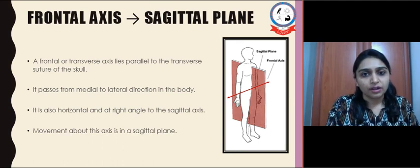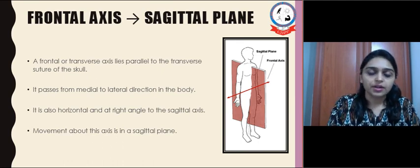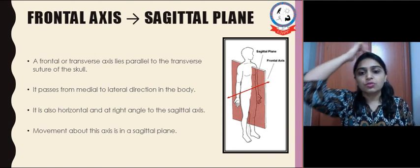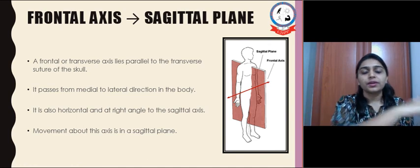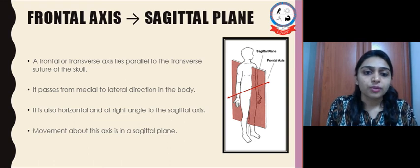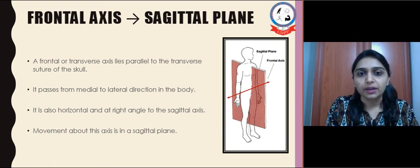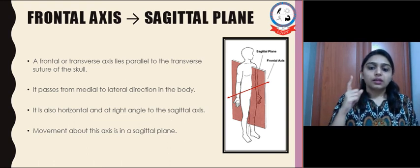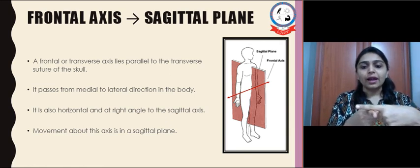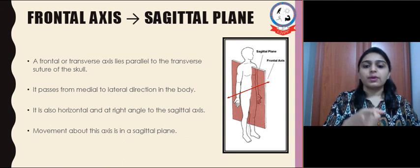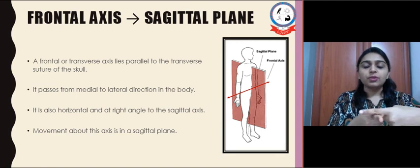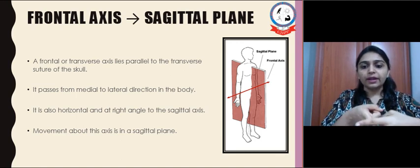Next is the frontal axis and sagittal plane. The frontal axis passes along the transverse suture of the skull, that is in the medial-lateral direction. The plane in which movement occurs is the sagittal plane. The sagittal axis and frontal axis lie at right angles to each other — the sagittal axis passes from anterior to posterior and the frontal axis passes from medial to lateral.